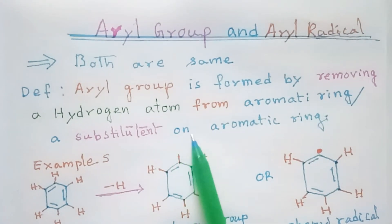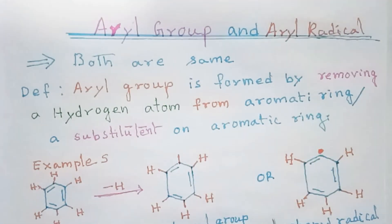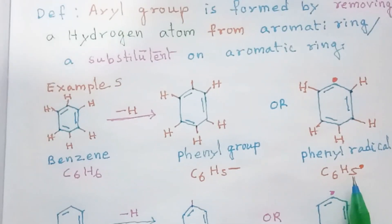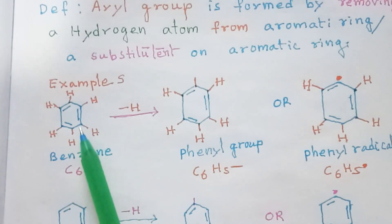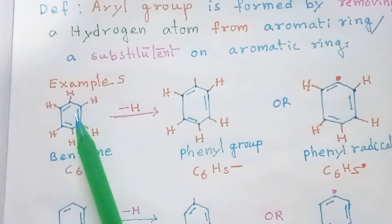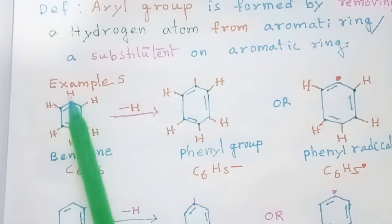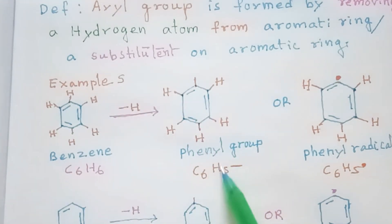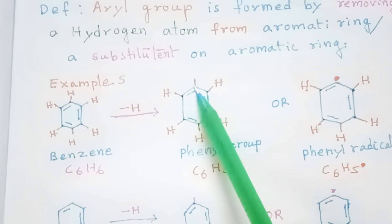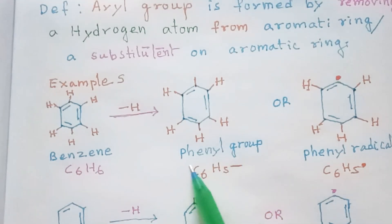The simplest example of an aromatic compound is benzene. As you know, it is made up of alternate double and single bonds — this is C6H6. If we remove a hydrogen atom from this benzene ring we get C6H5 with a vacant valence, and this group is called the phenyl group.